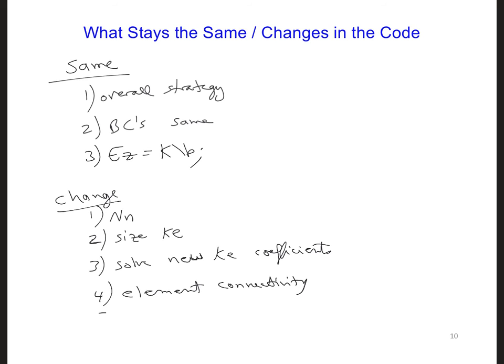We need to also, number five, adjust the global matrix assembly so that it takes into account the new size of the ke matrix. Ke is larger.